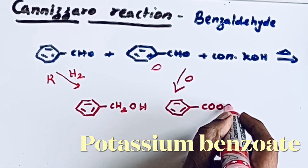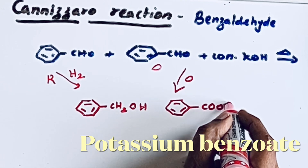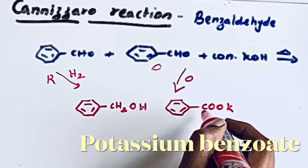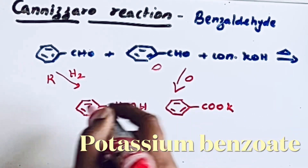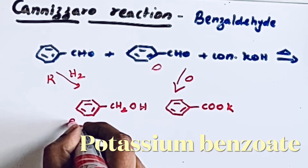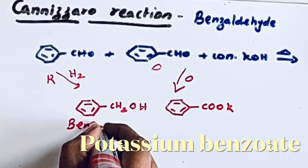Since we used KOH, the product is COO⁻K⁺, that is the potassium salt of benzoic acid. The other product is benzyl alcohol.